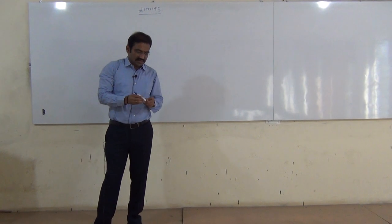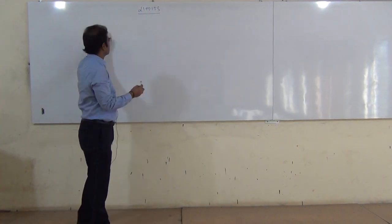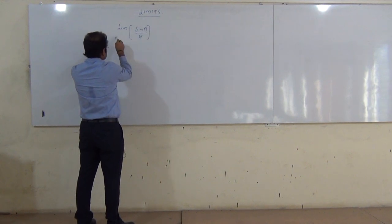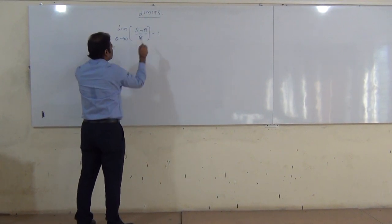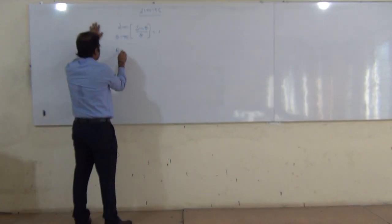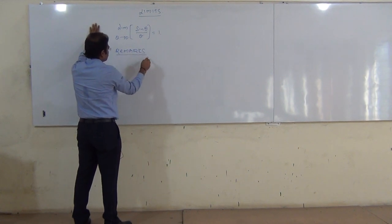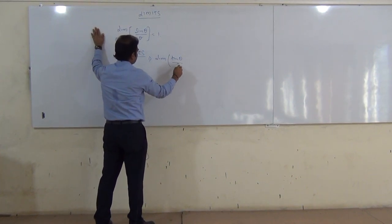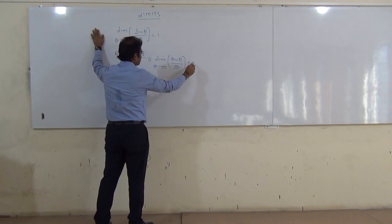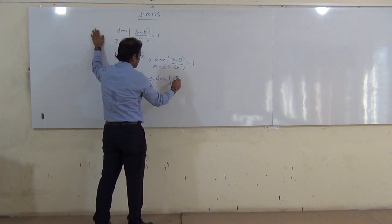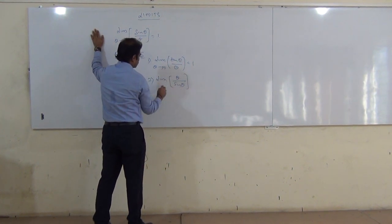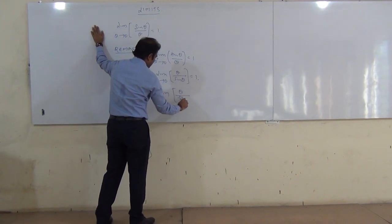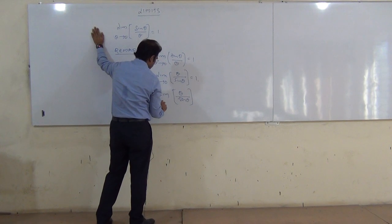In the previous class, I proved one result concerned with trigonometry. The limit of sin θ / θ as θ tends to 0 is equal to 1. This is the main identity. Then we have the remarks. First remark: limit of tan θ / θ as θ tends to 0 is also 1. Second remark: limit of θ / sin θ as θ tends to 0 is 1. Third remark: limit of cos θ / sin θ as θ tends to 0 is equal to 1.